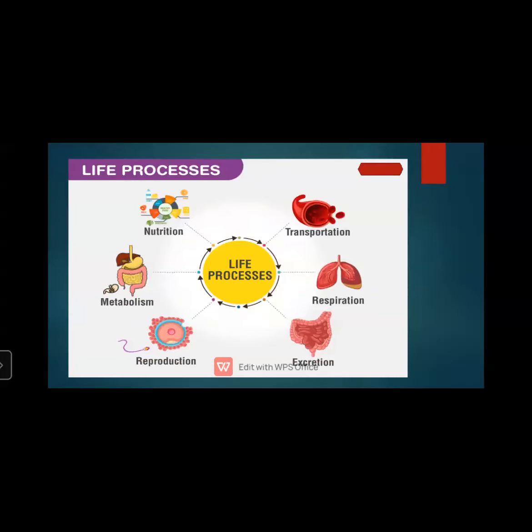There are different types of life processes: nutrition, transportation, respiration, excretion, reproduction, and metabolism. Nutrition is what we get from our food — carbohydrates, proteins, fats, minerals, vitamins, and fibre — all of which are necessary for our body to grow.